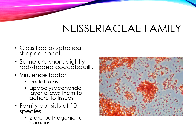Neisseria is a gram-negative aerobic bacteria, classified as spherical-shaped or cocci, but some are short, slightly rod-shaped bacteria, called coccobacilli. They have specific virulence factors that include their ability to produce endotoxins, as well as structural characteristics that allow them to adhere to different types of tissues. There are approximately 10 species within the genus Neisseria, and two of those are pathogenic to humans: the one that causes meningitis and the one that causes gonorrhea.